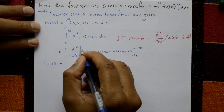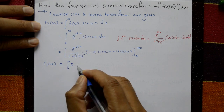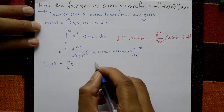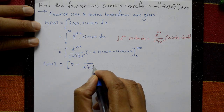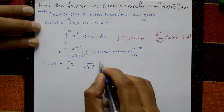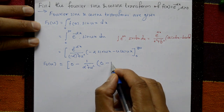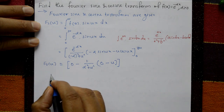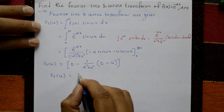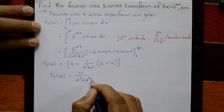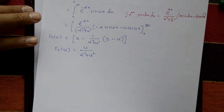Put the upper limit x equals infinity: e raised to infinity is 0, so the first term is 0. Now put x equals 0: it gives 1 upon (alpha squared plus u squared), into (sine(0) is 0, minus cos(0) is 1), which means minus u only. So fs(u) equals u upon (alpha squared plus u squared). This is the Fourier sine transform.